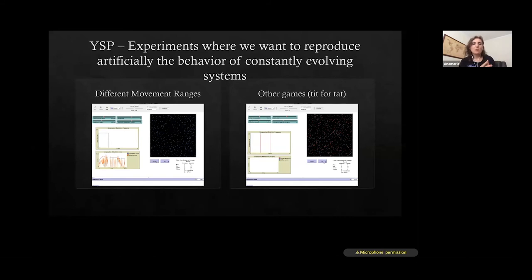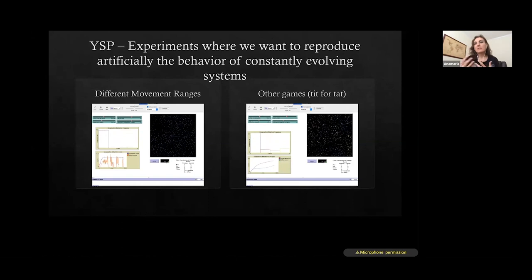At Blue Marble Space Institute, in the YSP program, the program that is hiring interns over the summer, I've been working this summer on experiments with a couple of two brilliant undergrads, where we wanted basically to reproduce artificially the behavior of these constantly evolving systems. So we look not just on how the systems evolve based on how they influence each other's cooperation or defection, but we also looked at whether this system moves. So we introduced movement into the system. If before we looked only at the rules of the game, now we introduce some more parameters. So we are looking also at different movement ranges. And we also looked at, I'm starting to look at other games. So not just Prisoner's Dilemma, but a game of tit for tat, for example.